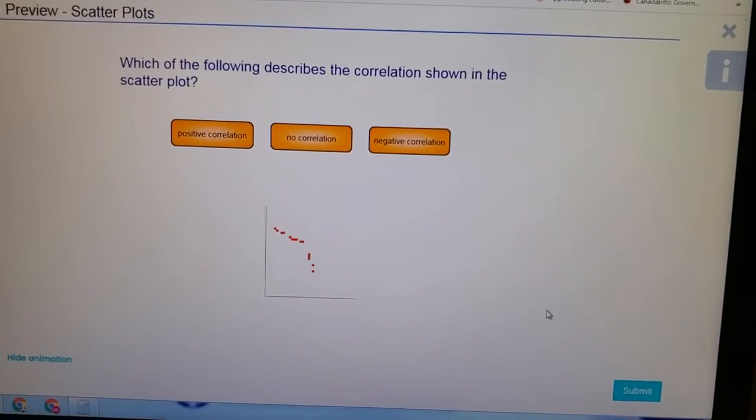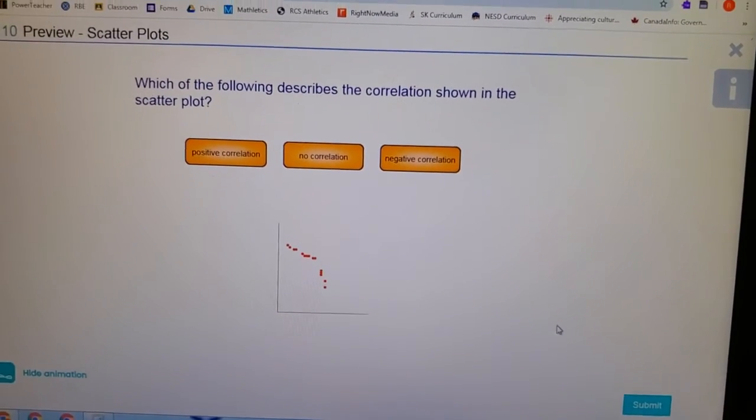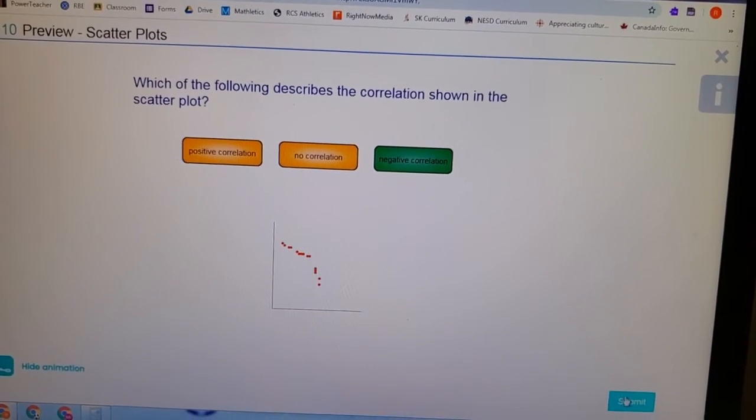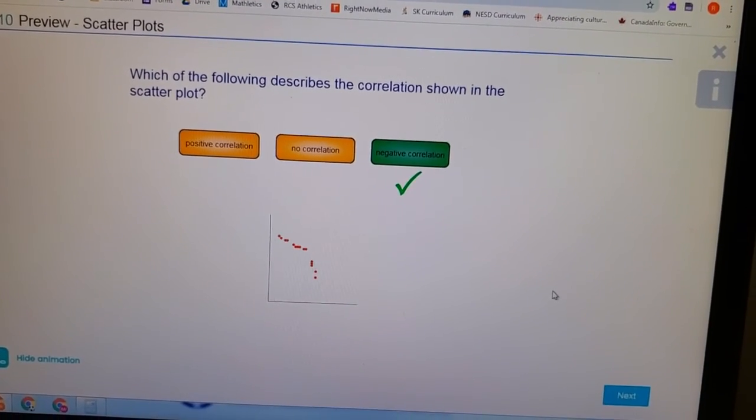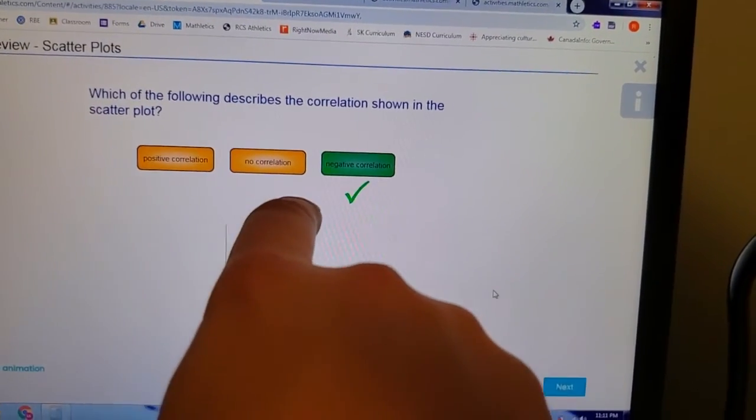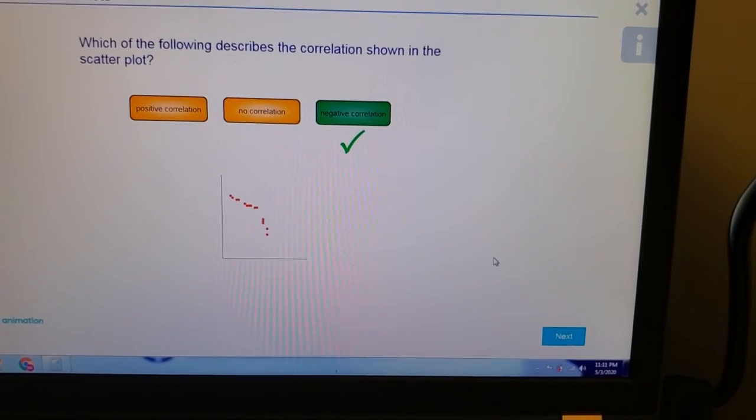Now this is for interpreting data. With the whole flatten the curve thing that's happening right now, there's lots of graphs. Essentially, flattening the curve is taking the positive correlation where it's moving up and trying to flatten it and turn it into a negative correlation eventually. That's what flattening the curve is all about.